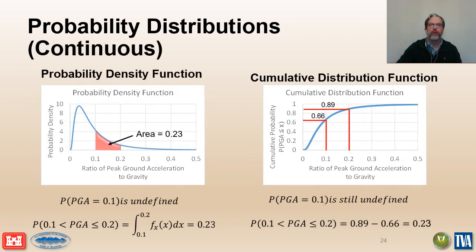Continuous random variables are portrayed using either a probability density function or a cumulative distribution function. Note that the probability for a specific value is undefined for a continuous random variable — we can only calculate the probability for a range between two values, which is calculated as the area under the probability density function. This is one of the reasons why a hazard curve must be divided into loading intervals for an event tree analysis. The cumulative distribution function can also be used to calculate the probability of a range between any two values.